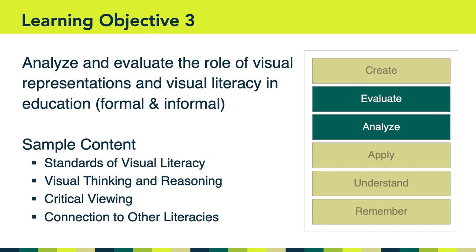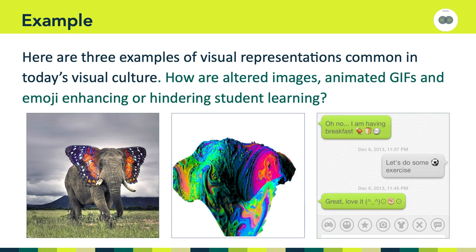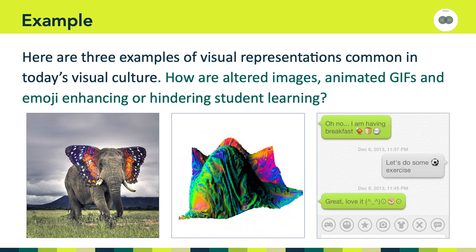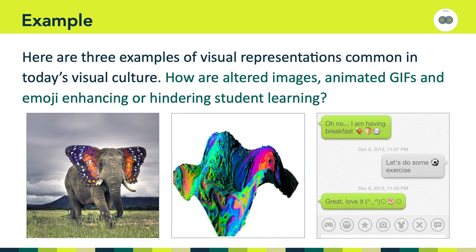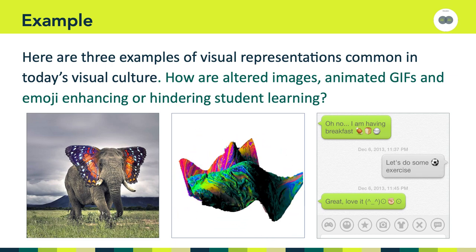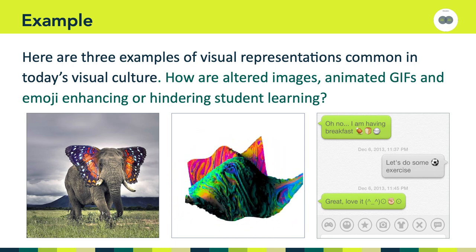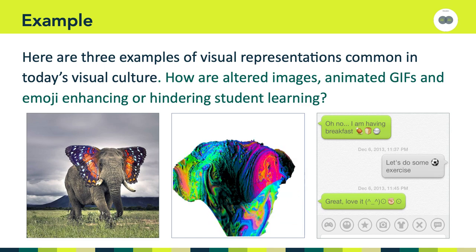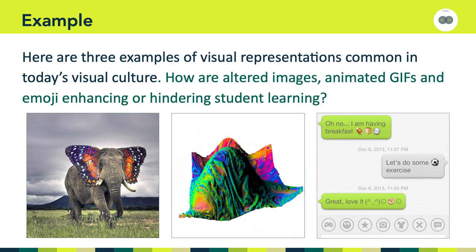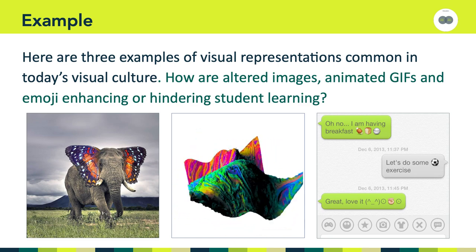Throughout all of this, we'll make references to other types of literacies, such as data literacy, information literacy, and multimedia literacy. For a final example, here are three visual representations common in today's visual culture. Within the context of education, how are altered images, animated GIFs, and emoji enhancing or hindering student learning? At a minimum, we have to say these types of visual representations are changing our approach to teaching and learning, and one of our responsibilities is to understand how we can support learners in a world that's so, so visual.